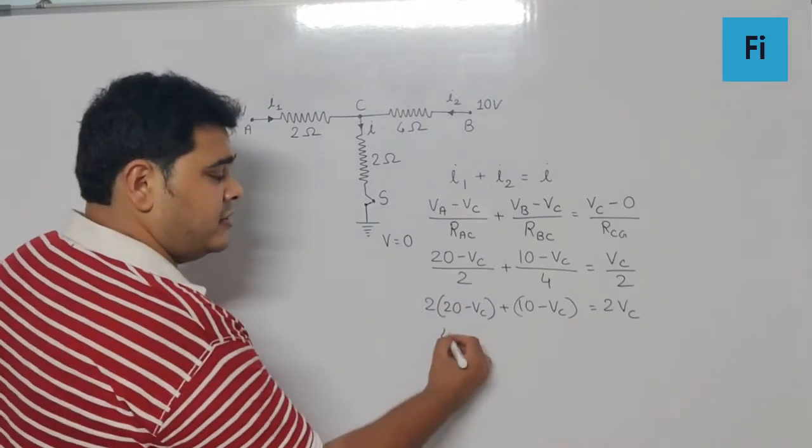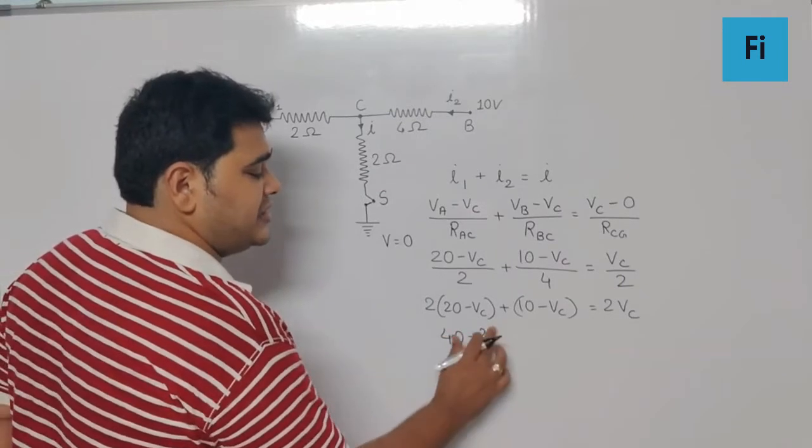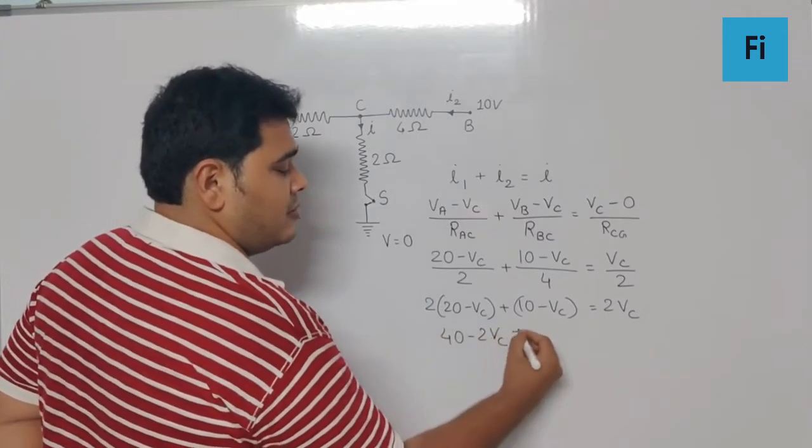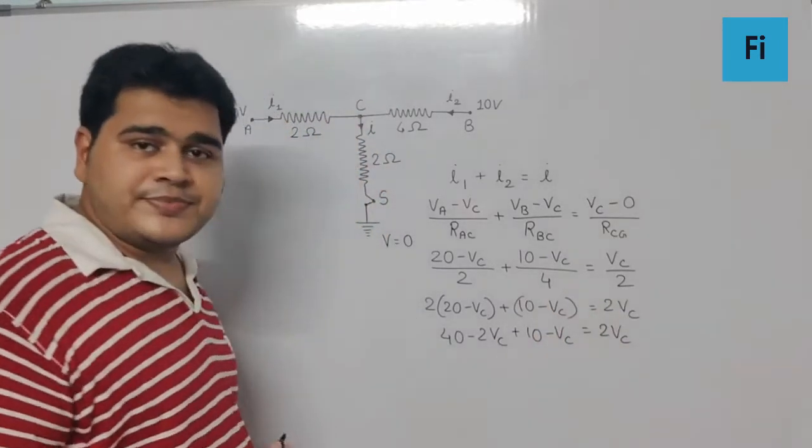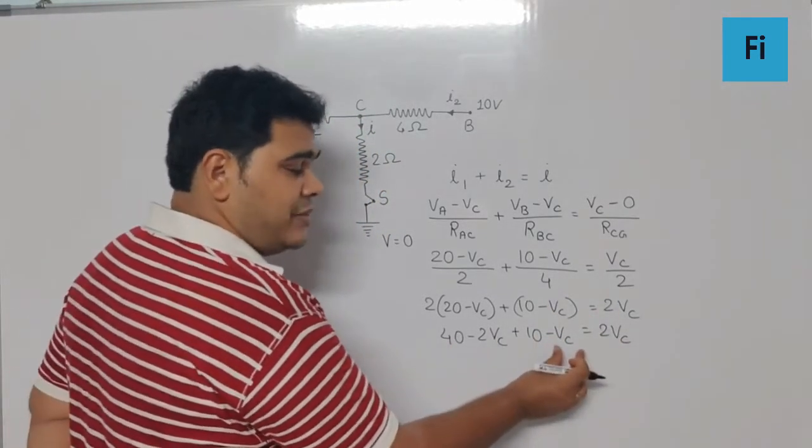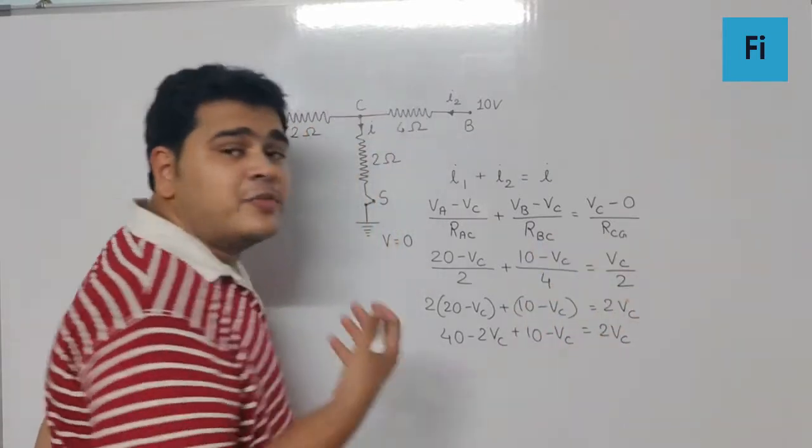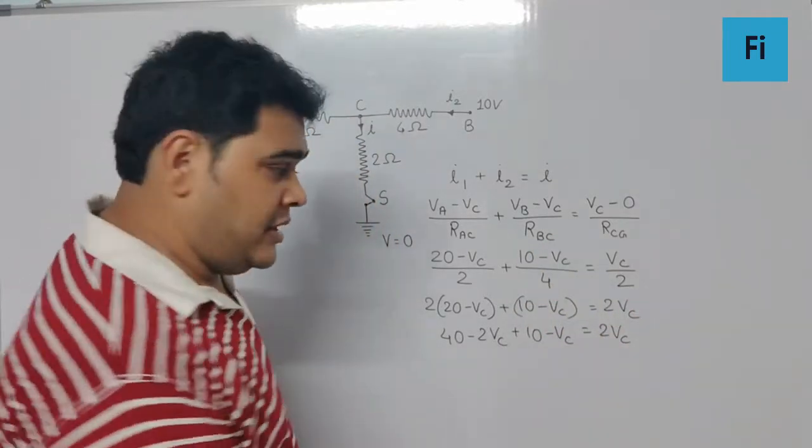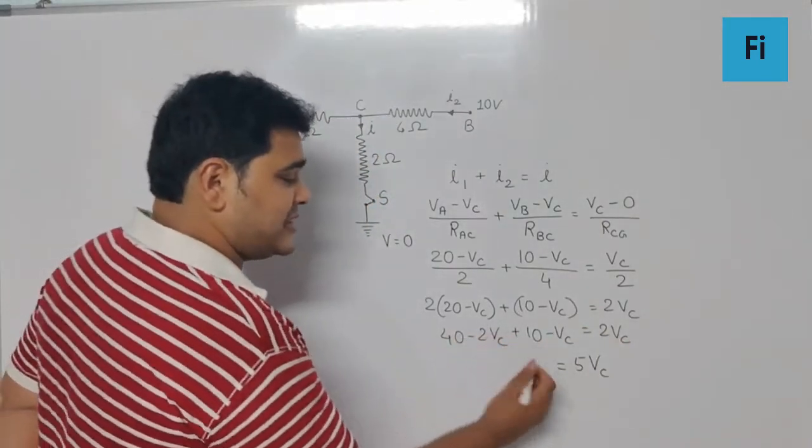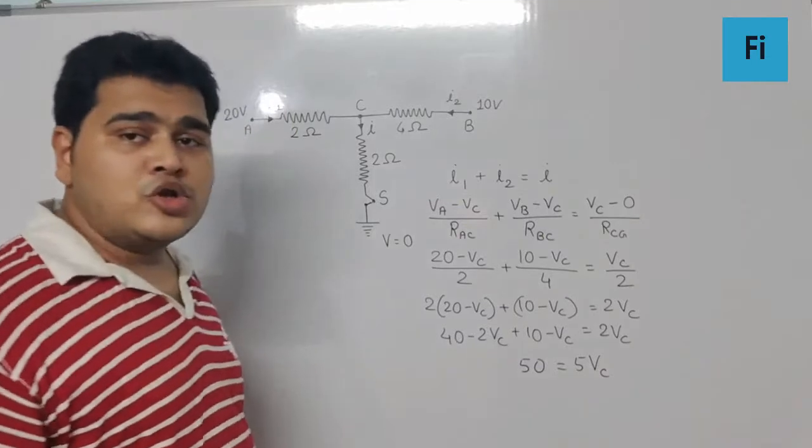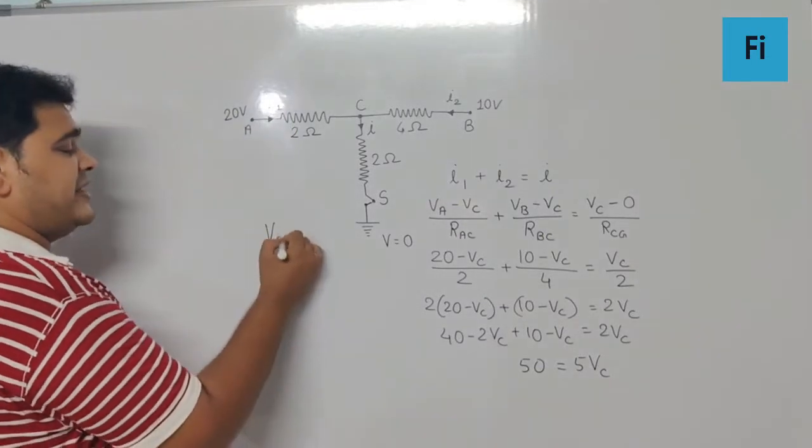So now if I open the brackets I get 40 minus 2 VC plus 10 minus VC is equal to 2 VC. So minus 2 VC minus VC goes over there becomes positive, so 2 plus 1 plus 2 gives you 5 times VC and 40 plus 10 is 50. So definitely VC we can get as 10 volt.